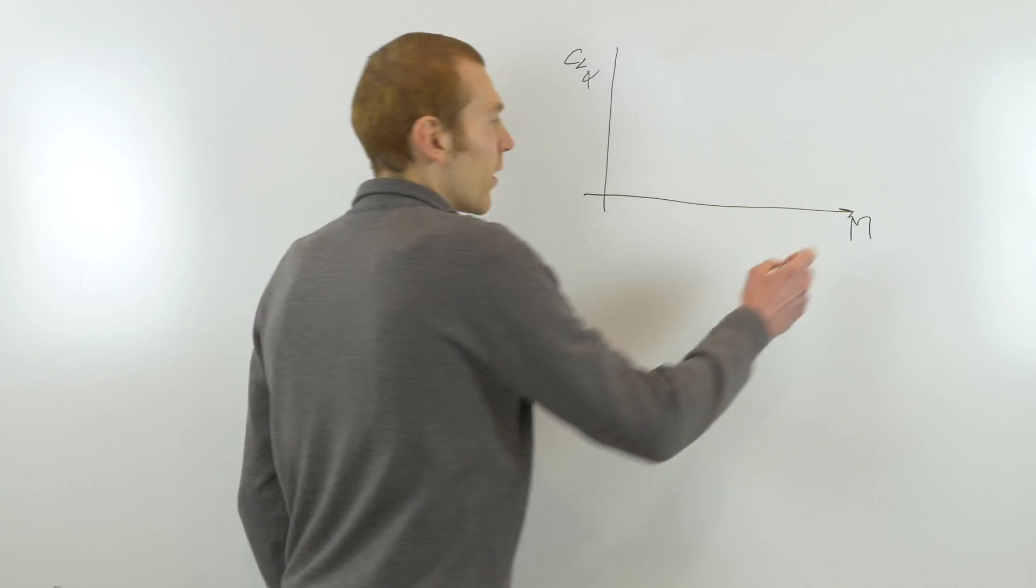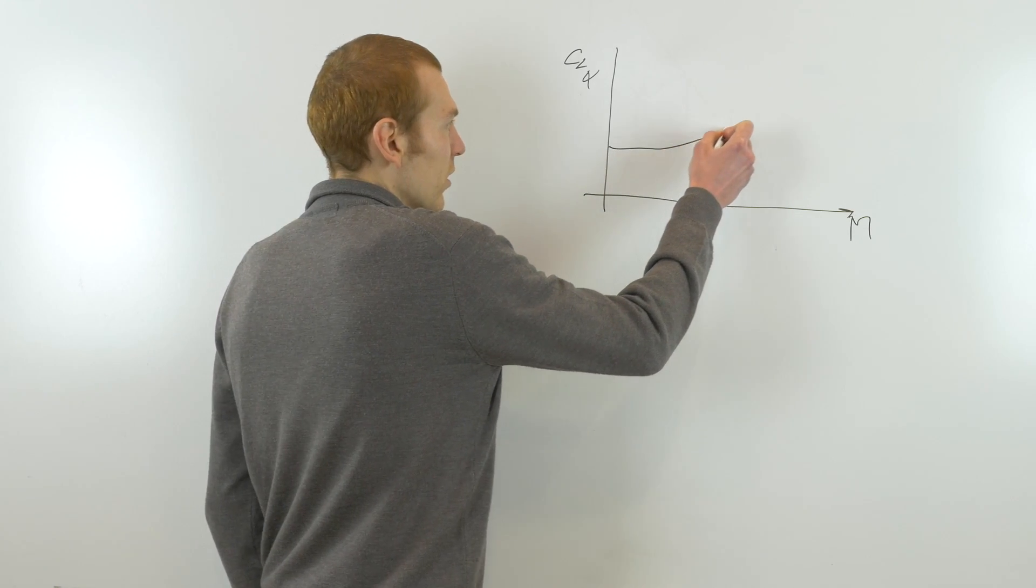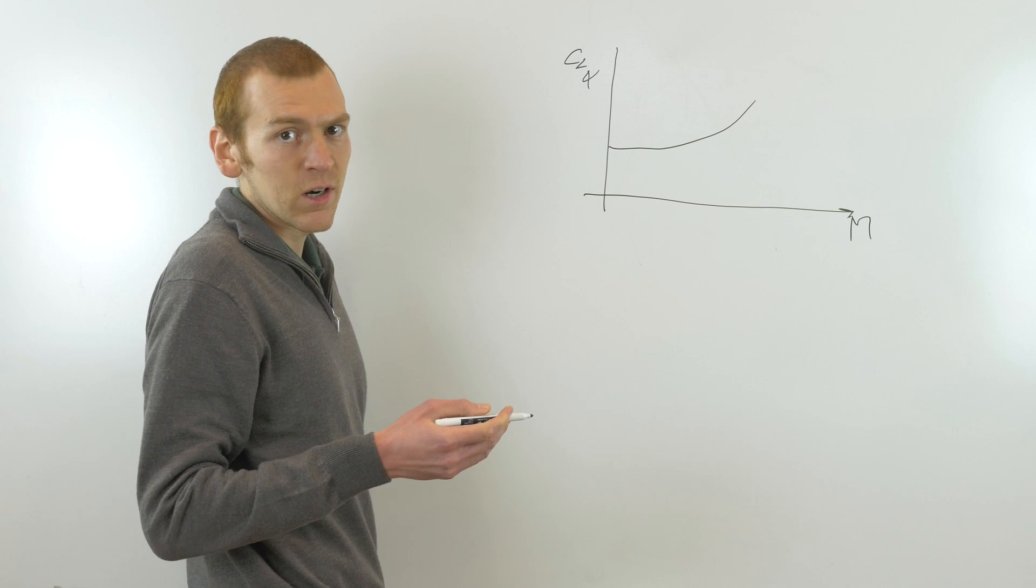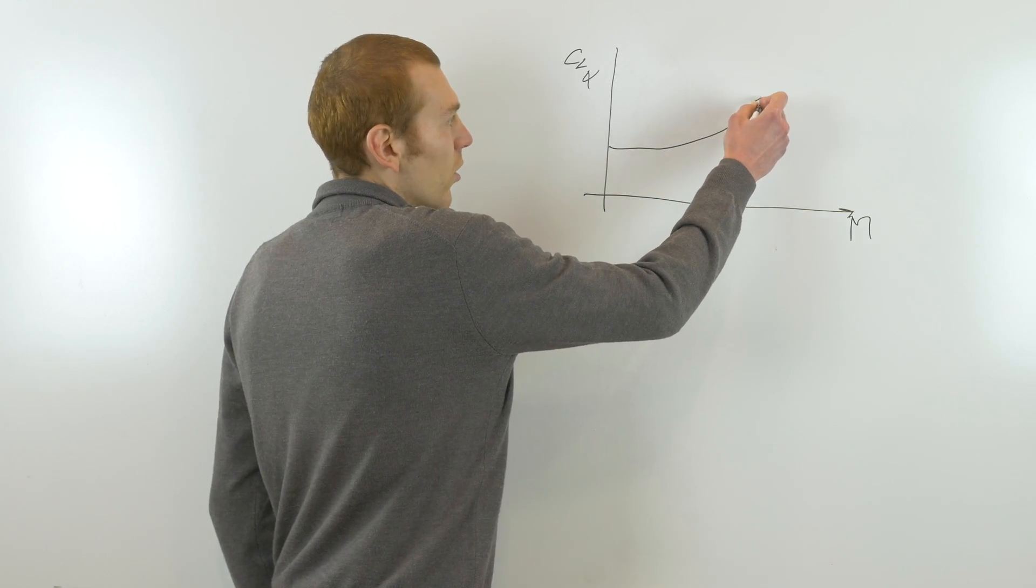As the Mach number increases, so as the aircraft speeds up, the CL-α tends to increase until we hit the transonic regime where shockwaves develop and they lead to a drop of CL-α.